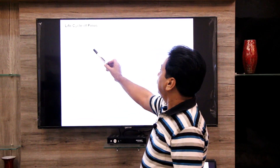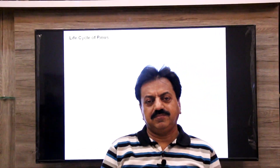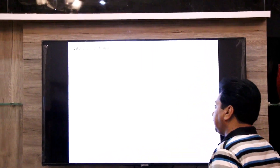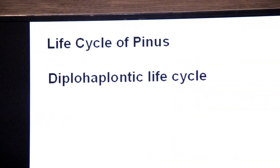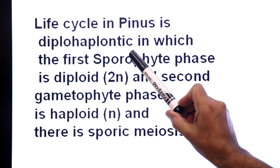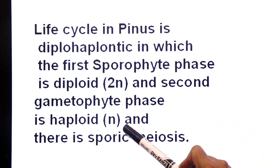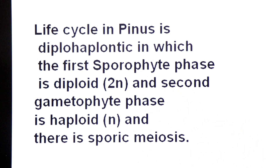Assalamu alaikum, namaste dear students. Today I am with you to discuss the life cycle of Pinus plant, which is a gymnosperm. The life cycle of Pinus plant is diplohaplontic, in which the first phase, the sporophyte, is diploid, the second phase, the gametophyte, is haploid, and there is sporic meiosis — meaning the spores are formed by meiosis.